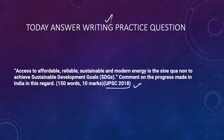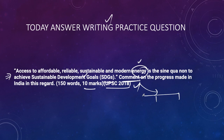For practice, here is a question from the UPSC 2018 Mains exam, GS Paper 3 — a 10-marker question on SDGs: 'Access to affordable, reliable, sustainable, and modern energy is synonymous with achieving sustainable development goals. Comment on the progress made in India in this regard.' Collect data on India's energy targets under SDGs. When writing the answer, address the directive 'comment' by taking a stand — supporting India's progress, opposing it, or taking a balanced approach appreciating some aspects and criticizing others.